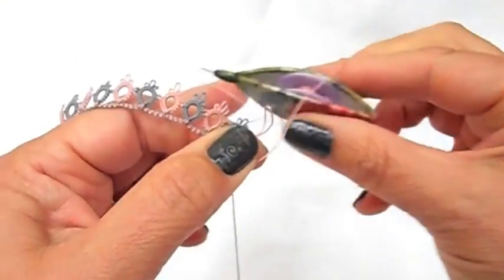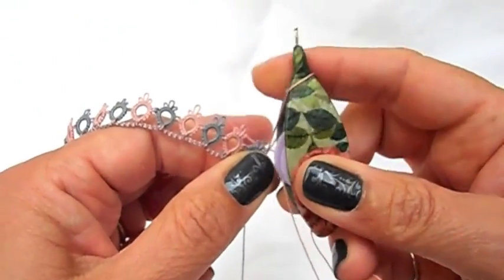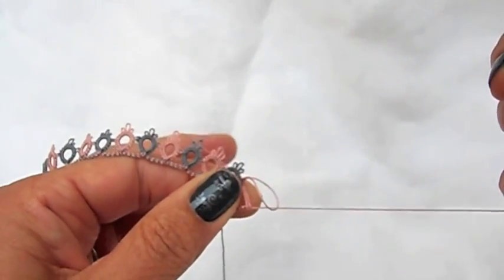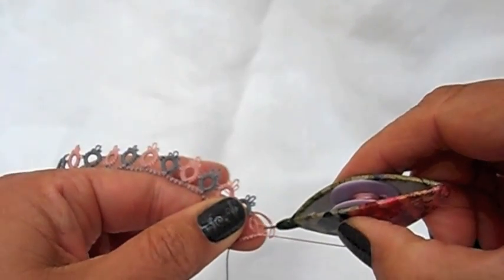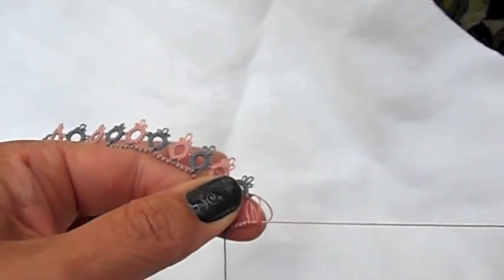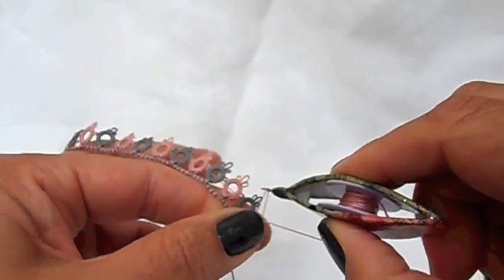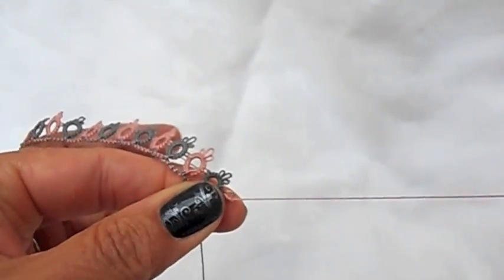Make the first half of the next double stitch, and now pass your shuttle through the loop. This gives you two loops here sliding down around your core thread, and this is what will hide the color blip at the back.